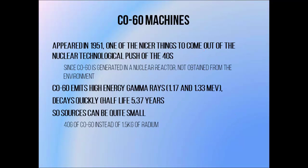After World War II ended, a lot of effort went into finding non-destructive uses for nuclear technology. One of the most prominent examples is the use of nuclear reactors to create artificial radioisotopes for use in medicine. Cobalt-60 was chosen as an ideal candidate for use as a teletherapy source, since it produces high-energy gamma rays similar in energy to those produced by radium, but decays much more quickly — having a half-life of just over 5 years compared with radium's 1,600 years. This means it produces radiation at a very high rate, allowing for smaller sources and higher dose rates. 40 grams of cobalt-60 could produce roughly the same radiation output as 1.5 kilograms of radium — a massive leap forward, since the total amount of purified radium in the world at the time was only about 2.5 kilograms.